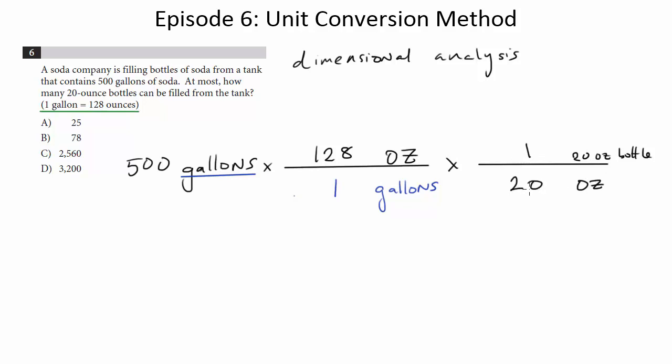So there's our conversion, right? One for 20. Now, once we've got the units, notice all of these units are going to cancel. Gallons cancels gallons. Ounces cancels ounces. We're just left with 20-ounce bottles.